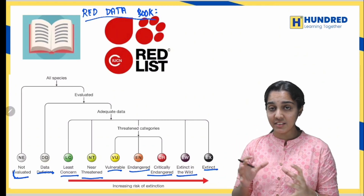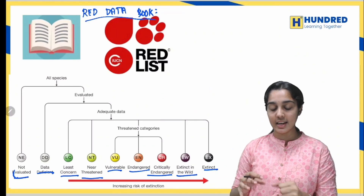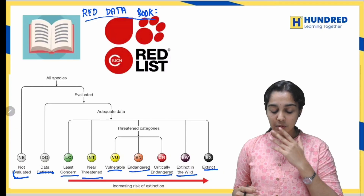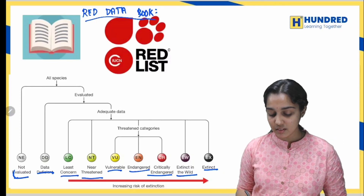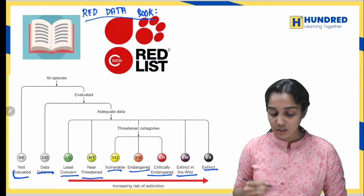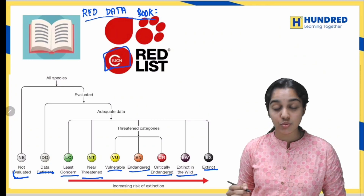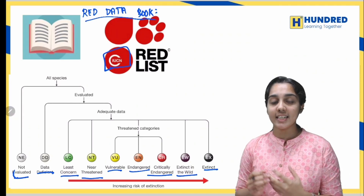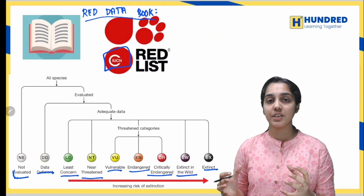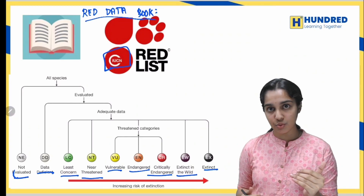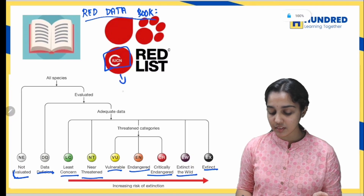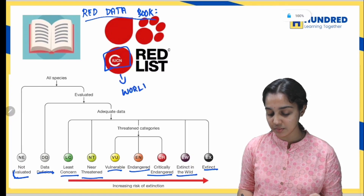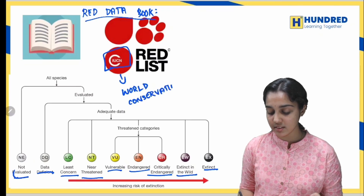The Red Data Book is maintained by IUCN — the International Union for Conservation of Nature — which has now been renamed as the World Conservation Union, abbreviated as WCU.